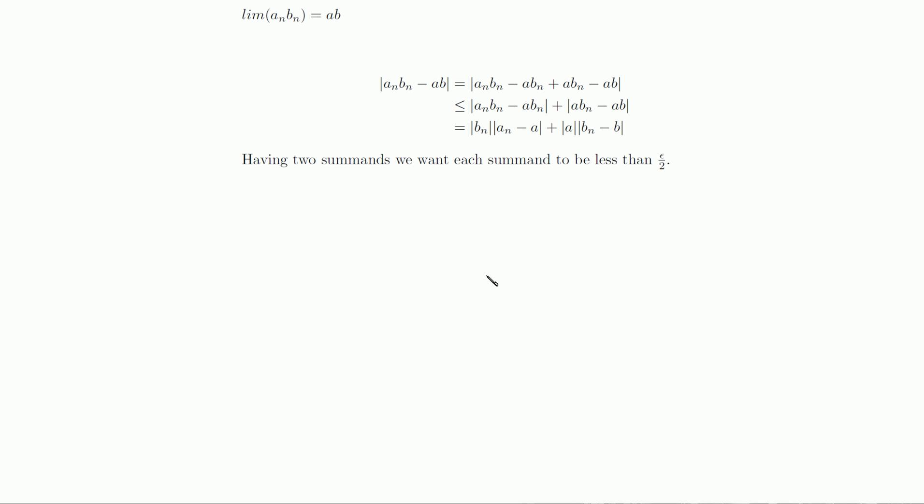We can do this because they each represent convergent sequences and thus have to be less than any positive epsilon for some n.